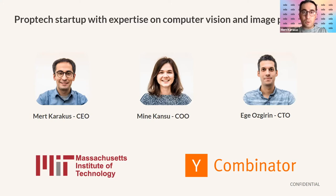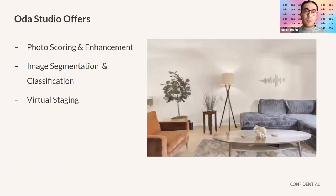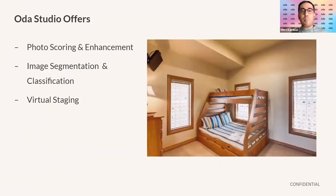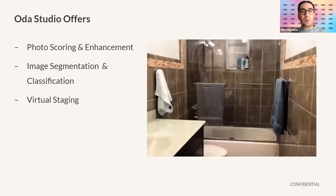We are taking this technology and relying on our image processing expertise to create a toolkit that allows you to automate a lot of marketing and operational work that might be taking a lot of time and resources right now. We do it across three different product categories. Our flagship product is a photo scoring and enhancement tool for real estate, which allows you to automatically improve the quality of your photos and make them more attractive to your prospects.